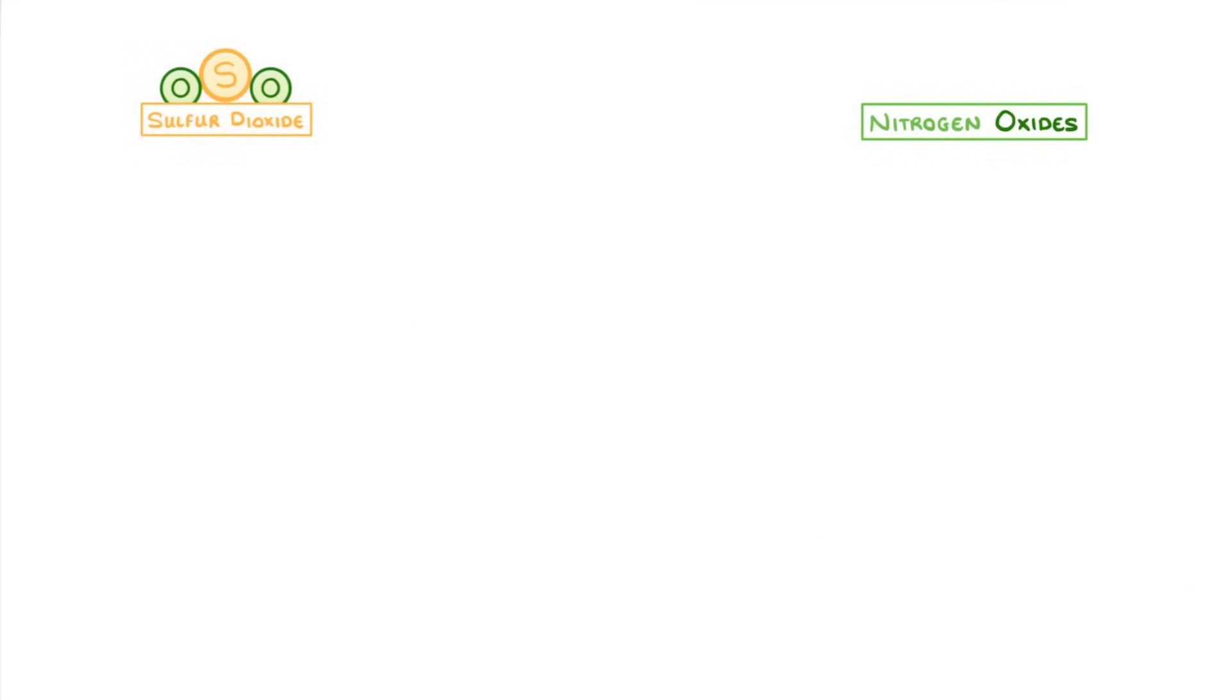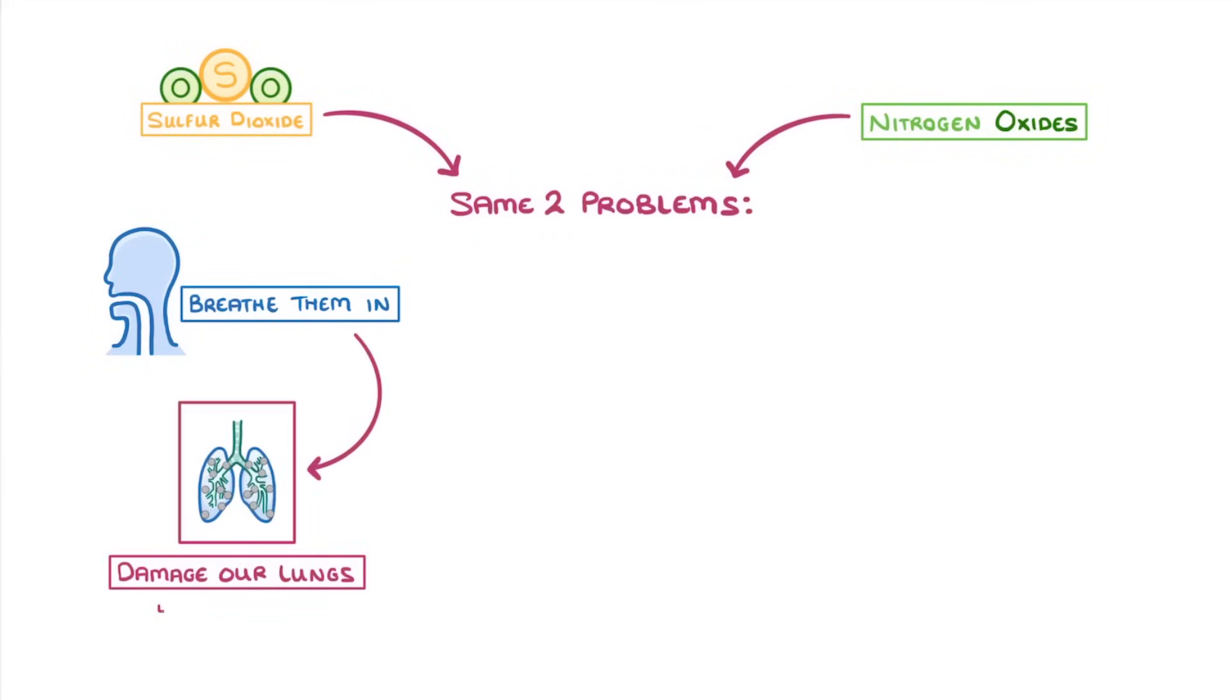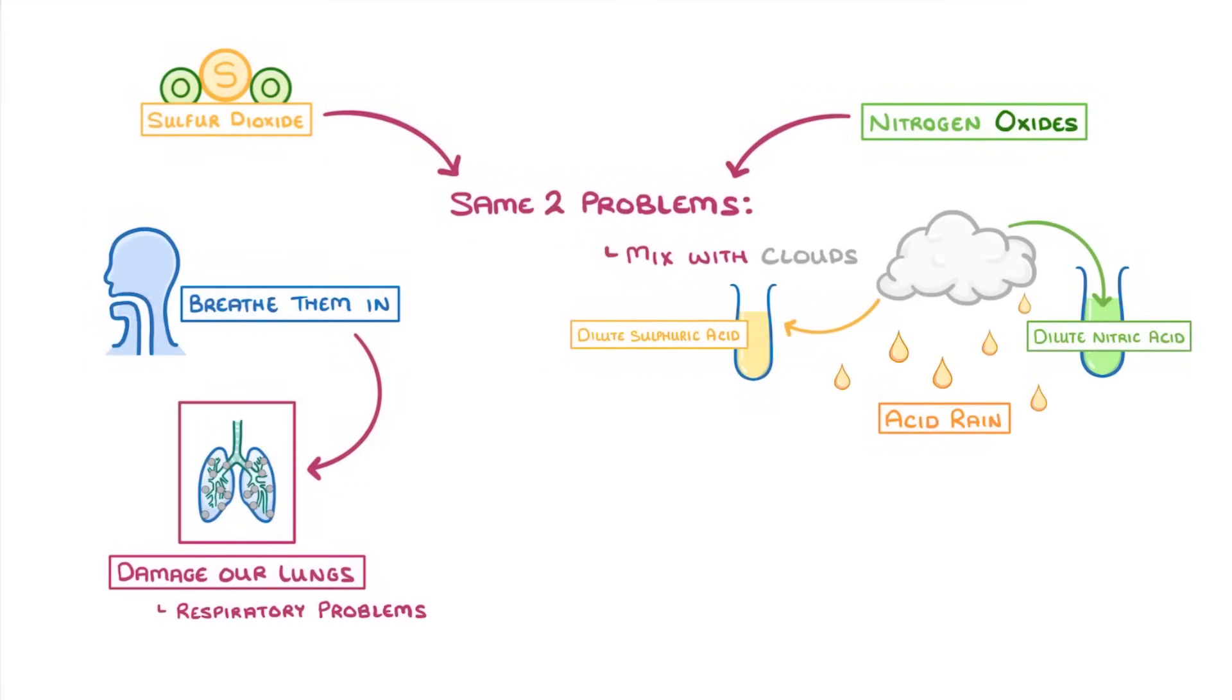Both of these types of pollutants have the same two problems. One is that, just like particulates, when we breathe them in, they can damage our lungs and cause respiratory problems. The bigger problem though, is that as these gases mix with clouds, they dissolve to form dilute sulfuric acid or dilute nitric acid, which then falls as acid rain.